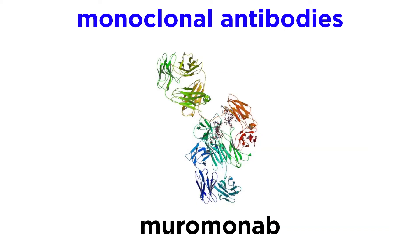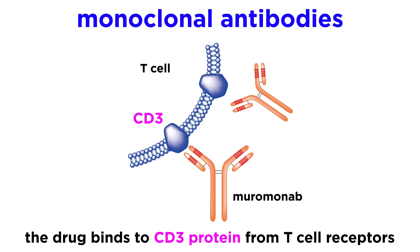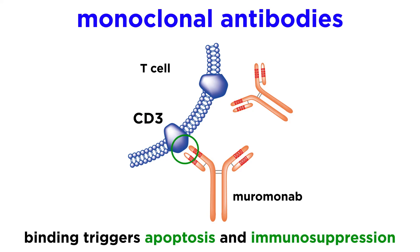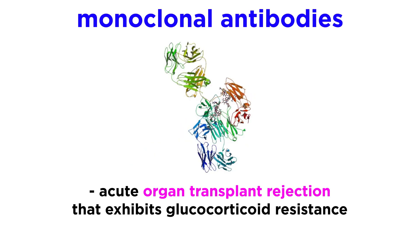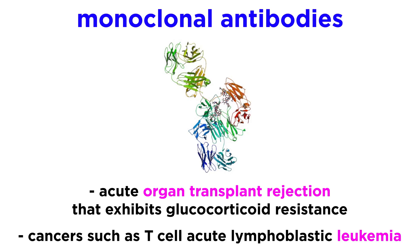Lastly, let's mention one immunosuppressive monoclonal antibody. Muromonab binds to the CD3 protein of the T cell receptor on T cells. When this antibody binds to CD3, apoptosis pathways of the T cell are triggered, leading to immunosuppression. These drugs are often used in acute organ transplant rejection that is glucocorticoid resistant, as well as some T cell related cancers, such as T cell acute lymphoblastic leukemia.